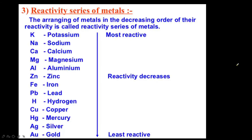The reactivity series is very very important. Metals arranged in decreasing order of their reactivity form the reactivity series. From most to least reactive: potassium, sodium, calcium, magnesium, aluminium, zinc, iron, lead, hydrogen, copper, mercury, silver, gold. The most reactive metal is at the top and reactivity decreases as you go down. This arrangement in decreasing order of reactivity is called the reactivity series of metals.